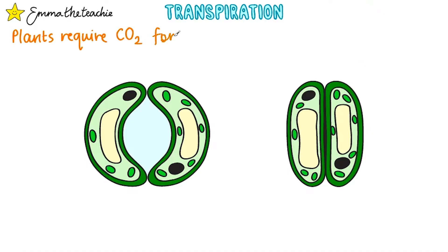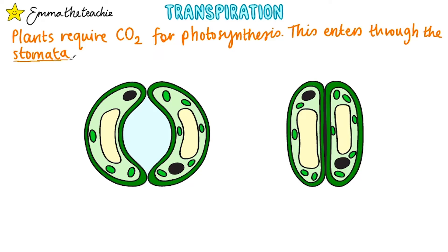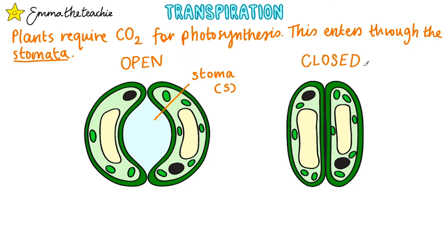Plants require carbon dioxide for photosynthesis. This comes from the air around them and enters the leaves through small pores called stomata. These can be opened — like this one which shows the stoma, which is the singular of stomata — or they can be closed. This opening and closing is controlled by the guard cells, which are found on either side of the stomata.